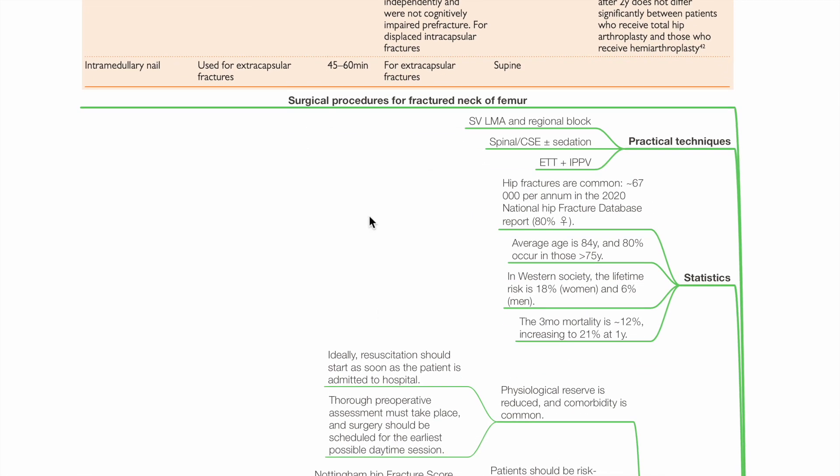Hip fractures are common. 67,000 per annum in the 2020 National Hip Fracture Database Report. 80% female. Average age 84 years old. 80% occurs in more than 75-year-olds. In Western society, lifetime risk is 18% for women, 6% for men. 3-month mortality is 12%, increasing to 21% at 1 year.